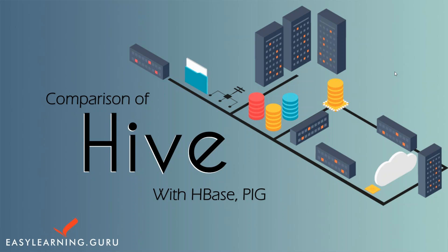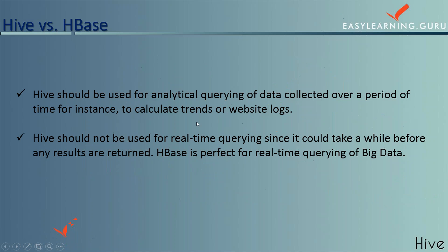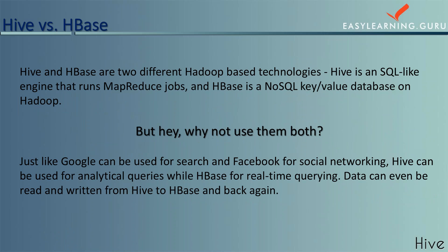In this session, we will see the comparison of Hive with HBase and Pig. Hive is used as an analytic tool to query data over a period of time — for instance, to calculate trends or website logs. It should not be used for real-time queries since it could take a while before results are returned. HBase, however, is perfect for real-time queries — that is the basic difference.